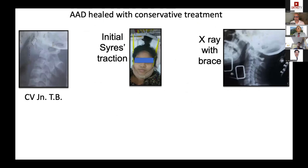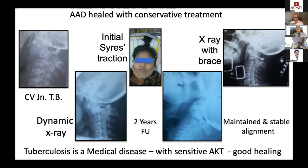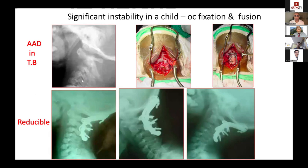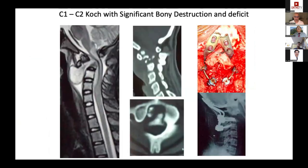In a case of tubercular AAD in a young girl, initial traction achieved reduction, followed by brace treatment, with late follow-up showing complete stability and healing. In another unstable tubercular AAD case with significant C1 destruction, occipitocervical fixation from occiput to C3 was performed with a nicely healed graft — when C1 cannot provide purchase, extend fixation to lower levels.